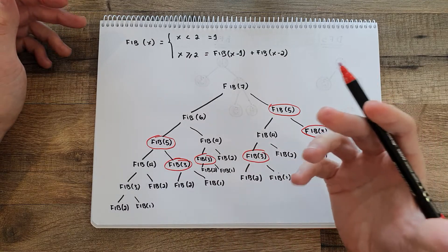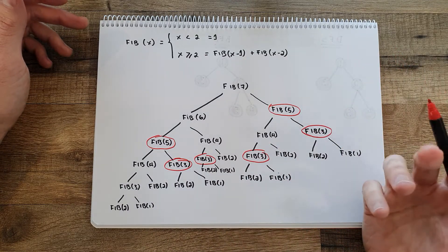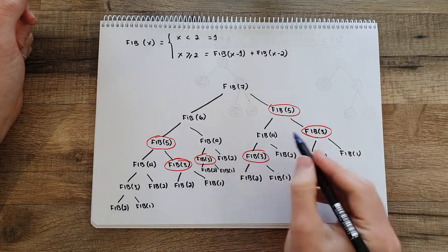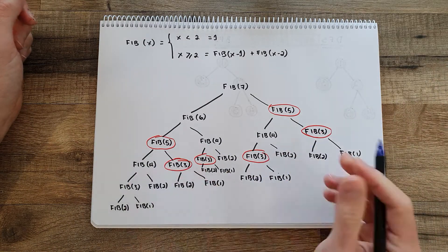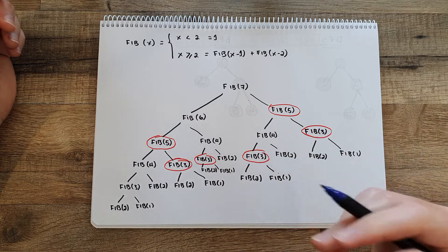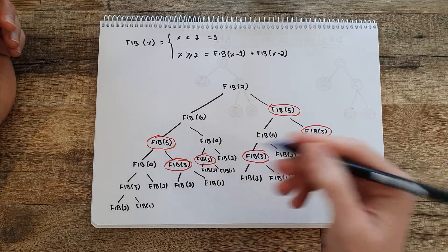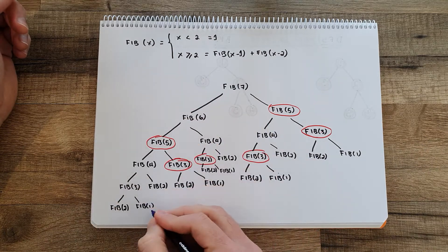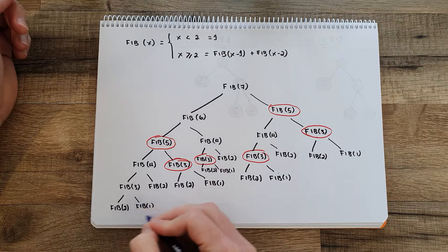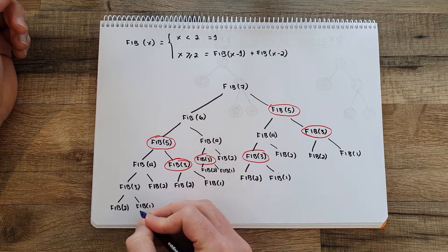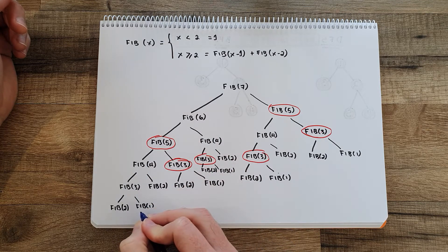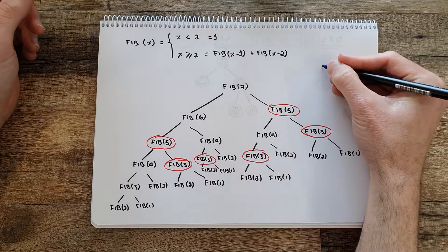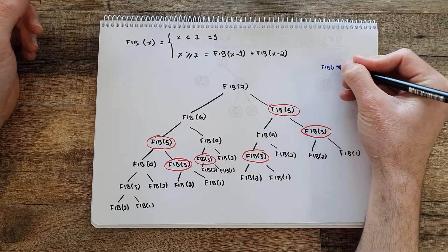This is a good example of why dynamic programming can be useful. In dynamic programming, what you do is cache these subsolutions into a data structure that you can use later to avoid recalculating them. For example, if you are calculating the whole tree, you start with Fibonacci of 1. If it's the first time you encounter Fibonacci of 1, you store Fibonacci of 1 as 1.